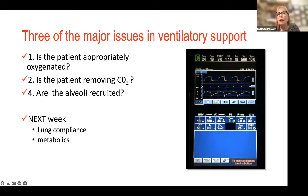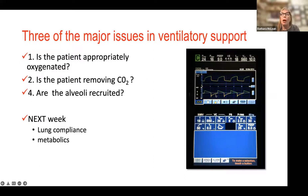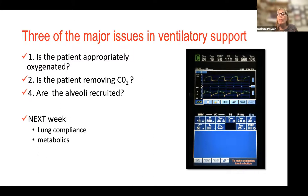Time for exhalation is looked at in the I:E ratio. Looking at this flow curve — the V with a dot over it — gas goes in, then it stops, then it goes out. Anything above the baseline is air going into the lung; anything below is air coming out. Before the patient takes his next breath, he should always have completed his exhalation. If he has not completed his exhalation, he's trapped what I call dirty gas — CO2-rich gas — in the lung.